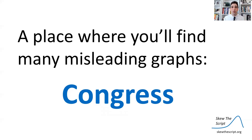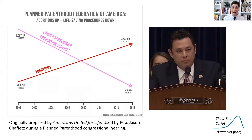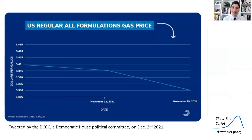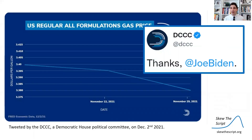Now let's look at Congress, where you'll find many misleading graphs. The first is a graphic on Planned Parenthood presented by Republican congressman Jason Chaffetz during a congressional hearing. It appears to show abortions going way up and cancer screenings going way down. He said: 'That's the reduction in breast exams and the red is the increase in abortions — that is what's going on in your organization.' The second was tweeted by the DCCC, portraying how gas prices under Joe Biden's administration are going way down, with the caption: 'Thank you Joe Biden for making gas prices go way down.'